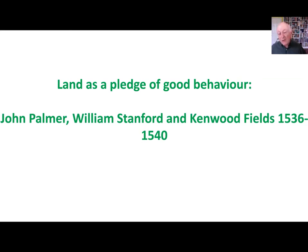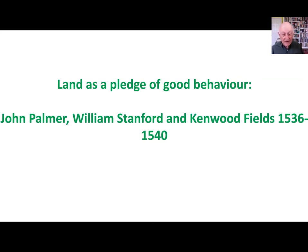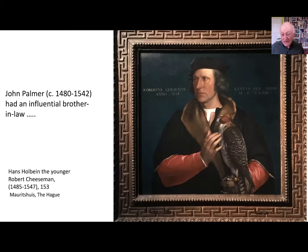He married a woman called Eleanor Taylor — Taylor was actually her married name. Her husband John Taylor had died a few years earlier, leaving her with a lot of land. But she already had a lot of land and wealth because she was the daughter of the cofferer to King Henry VII — in other words, a member of court. And her brother, Robert Cheeseman, was one of the wealthiest men in Middlesex, wealthy enough to be portrayed by Holbein.